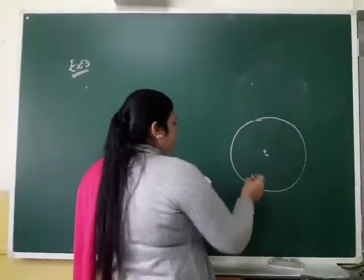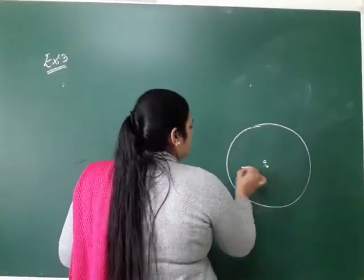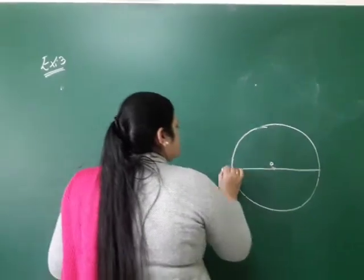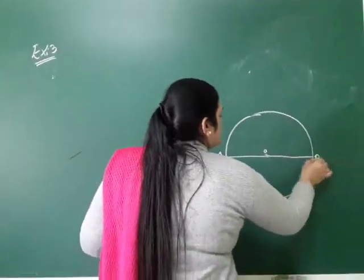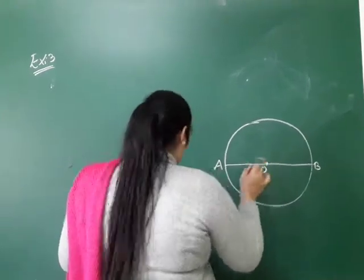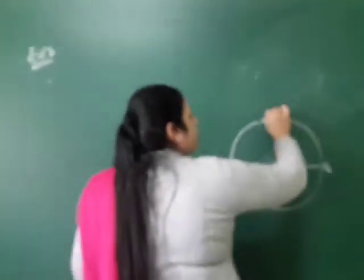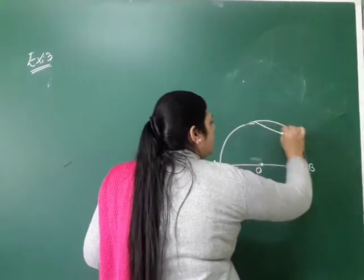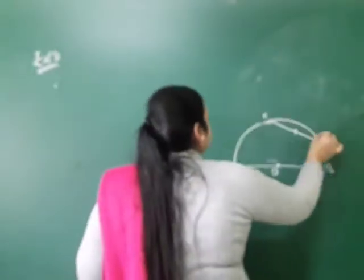In this figure, AB is the diameter with center O. CD is a chord that is equal to the radius. So radius is equal to CD.